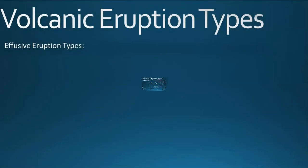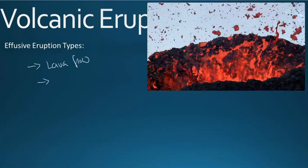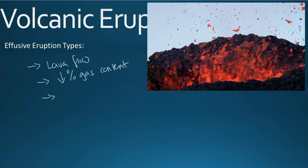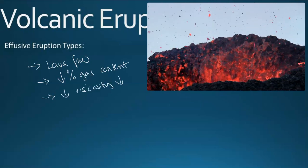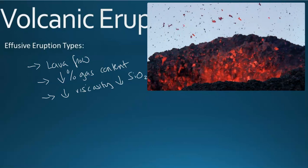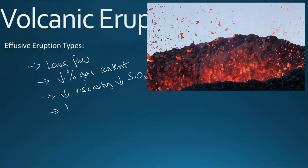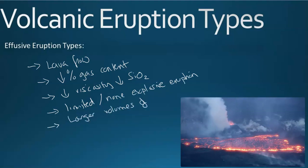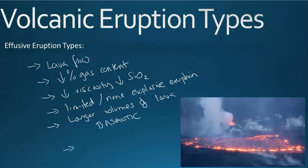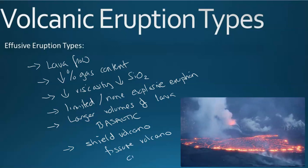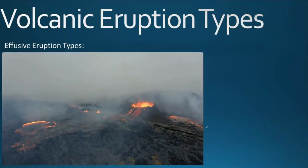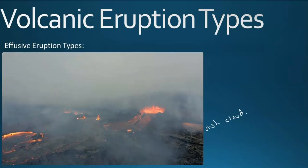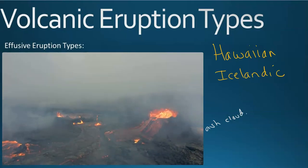The effusive eruption types are the ones that have more of a lava flow with decreased percent of gas content due to the lower viscosity and lower silica content, which would make it more fluid and allow the gas to escape. So you have a limited or non-explosive eruption. You would have larger volumes of lava, more basaltic lava, and you would get a shield volcano or a fissure volcano. Sometimes you might have a cinder or scoria cone, but that generally has a larger ash cloud, but it's not as explosive. These two types are Hawaiian and Icelandic. Icelandic is with fissures.